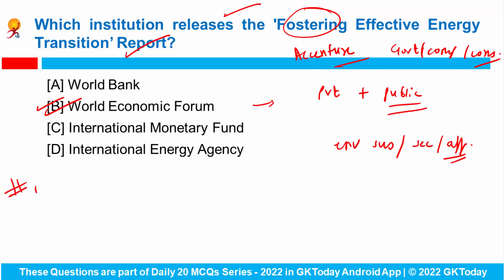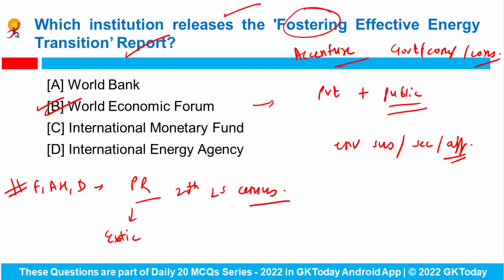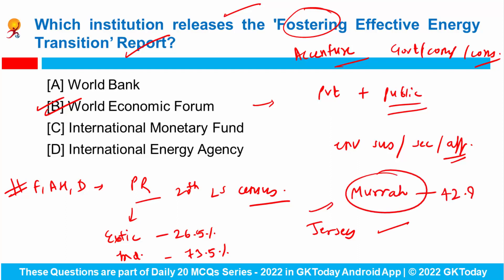Union Minister Shri Purshotam Rupala released the Breedwise Report of Livestock and Poultry based on the 20th Livestock Census. For the very first time, breedwise data was collected using tablets and computers. As per this report, exotic and crossbred animals contribute 26.5% of the total cattle population, while 73.5% are indigenous and nondescript cattle. Crossbred Jersey has the highest share in exotic cattle. In terms of buffalo, the Murrah breed contributes 42.8% and is commonly found in Uttar Pradesh and Rajasthan — so if asked, Murrah is a breed of buffalo.